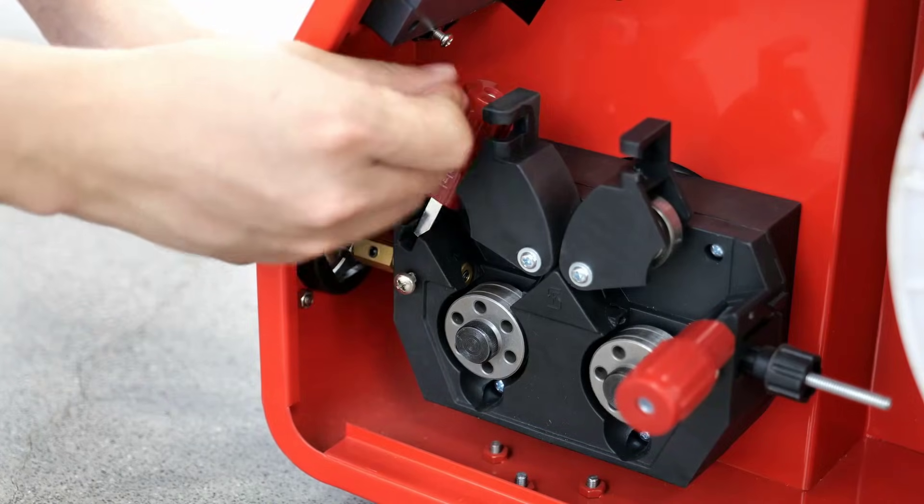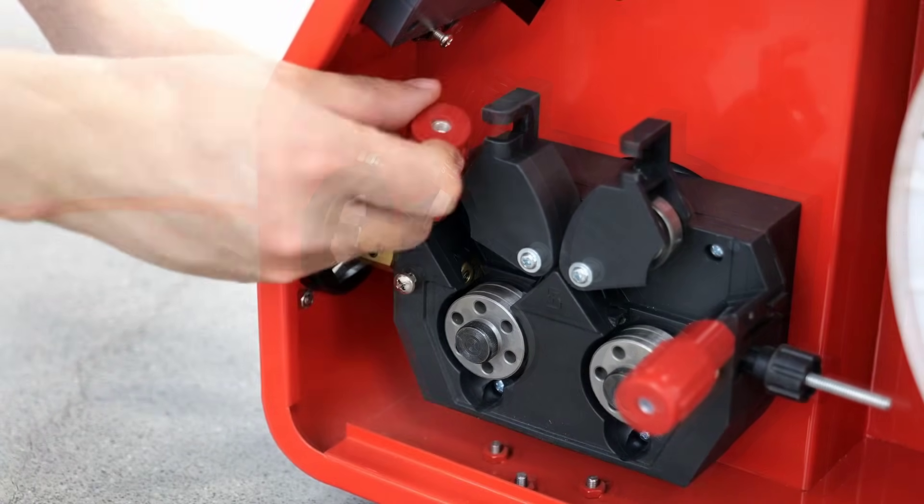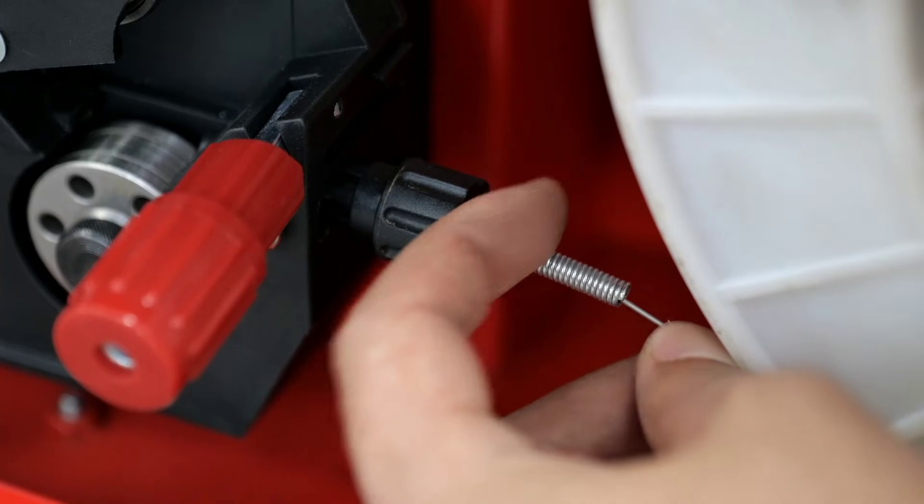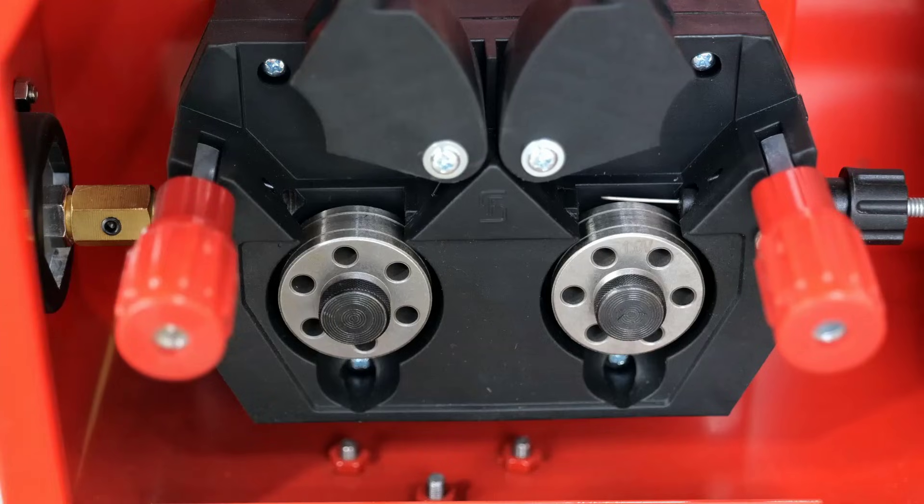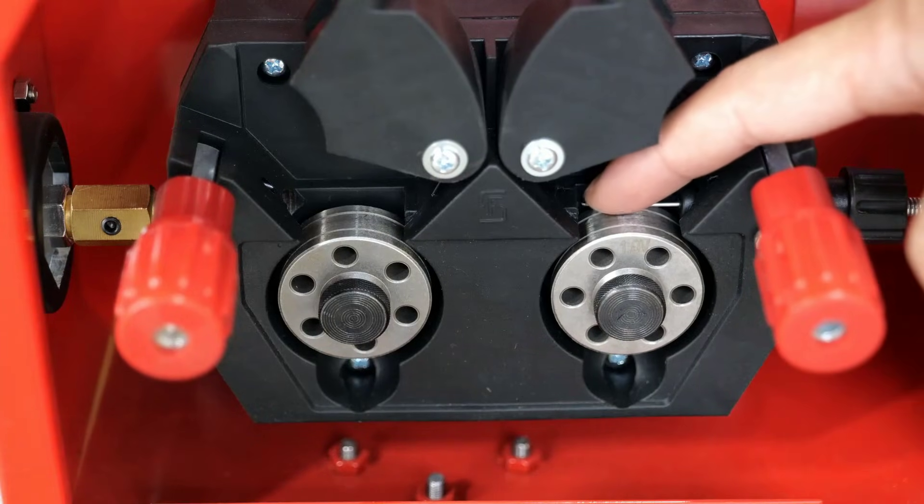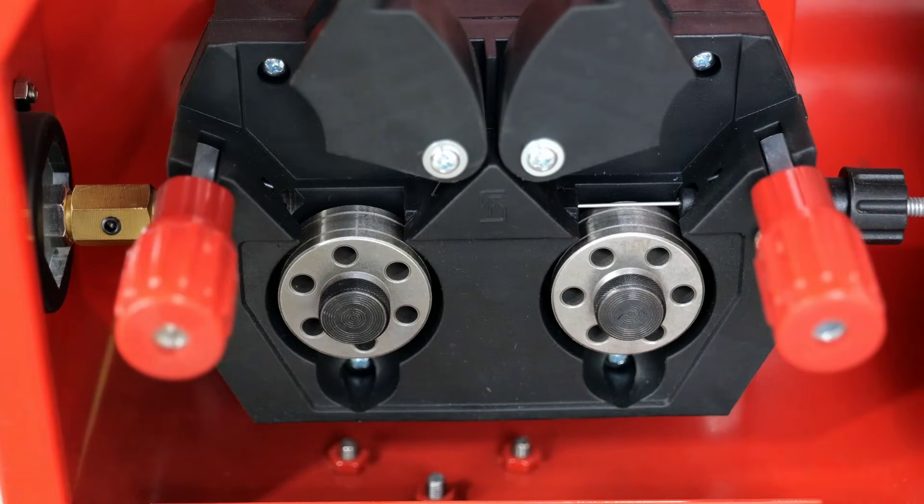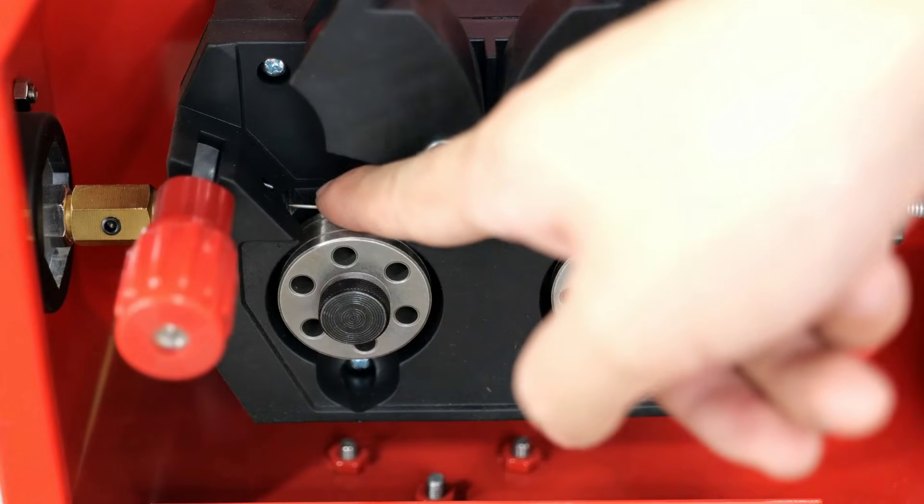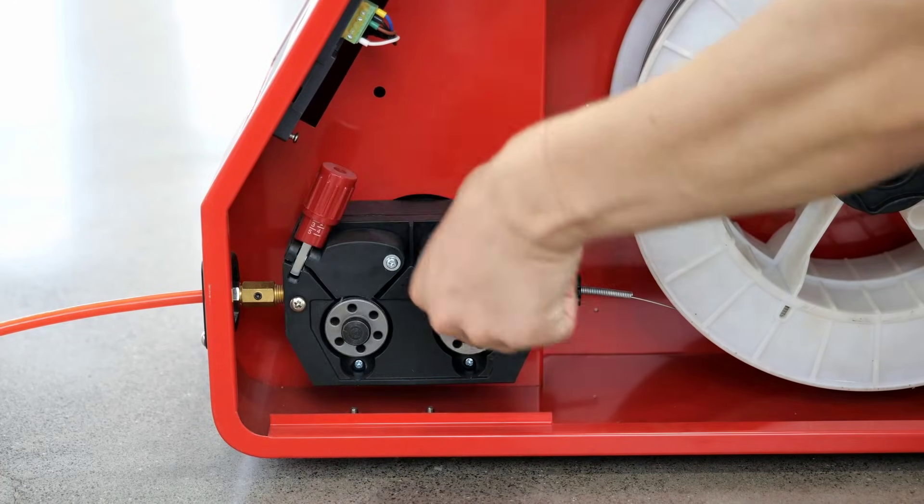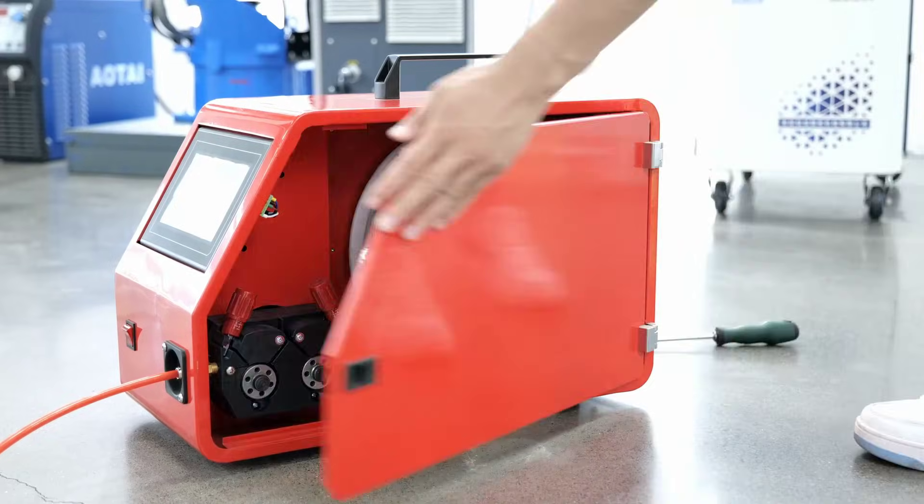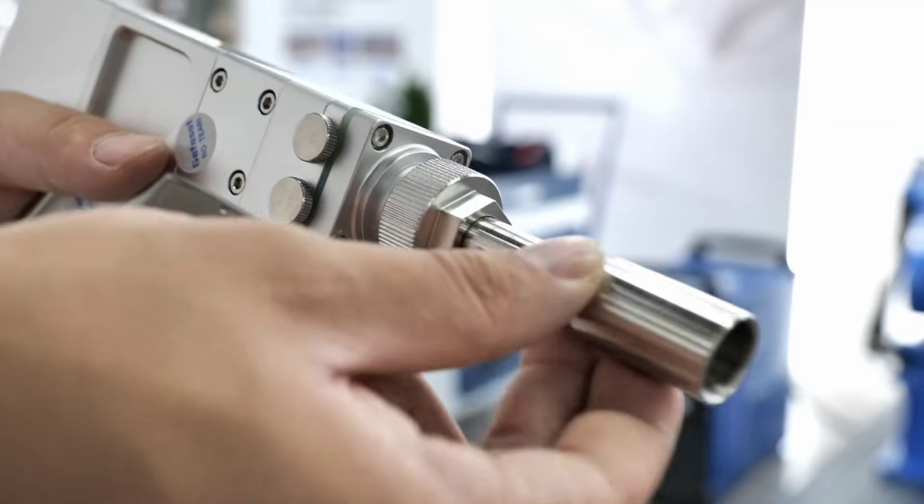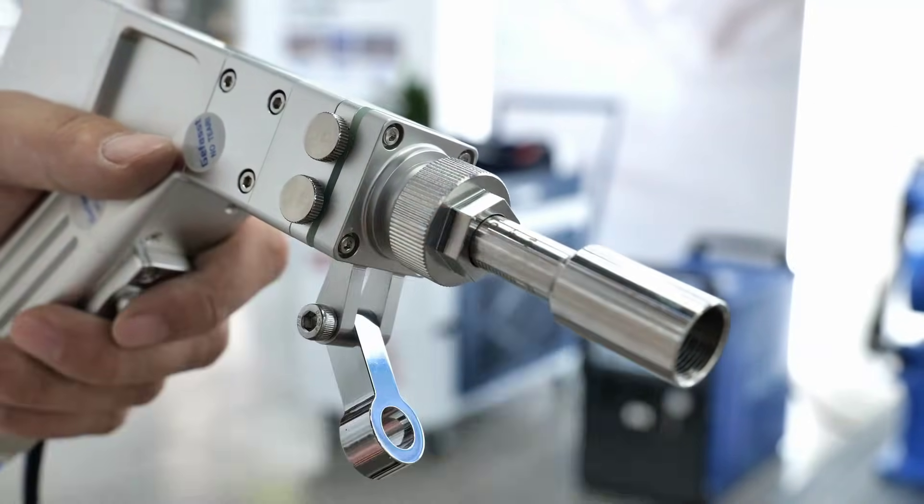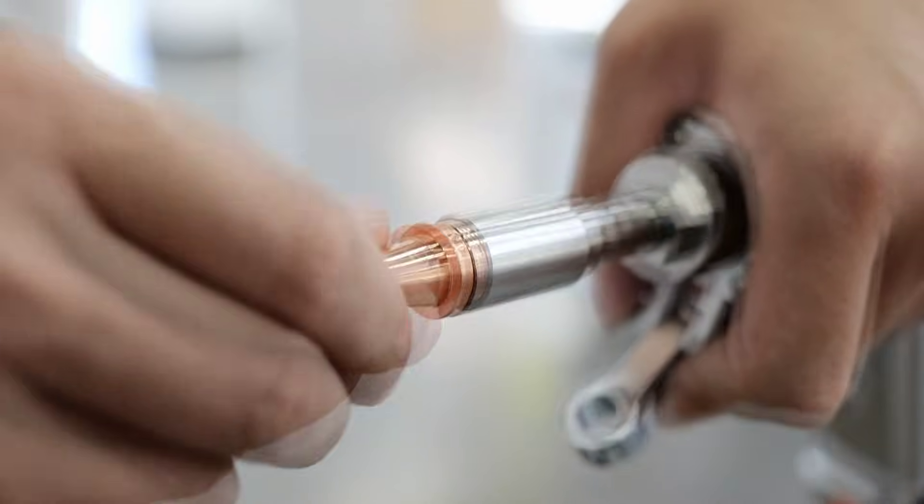The 2000W power output ensures strong weld penetration and stable operation, while the 220V input voltage is compatible with most industrial settings. What sets this machine apart is its dual functionality. It not only welds, but also includes a laser beam cleaner for surface preparation and post-weld cleaning. The Auto Wire Feeder is a valuable addition, significantly improving welding efficiency and reducing manual labor.